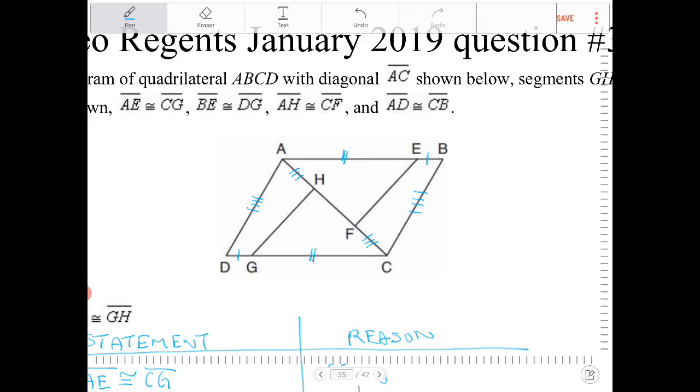We can also show that AE plus EB will equal to DG plus GC using segment addition postulates. So AB and DC therefore is going to be congruent as well. So ABCD will be a parallelogram as a result of this.